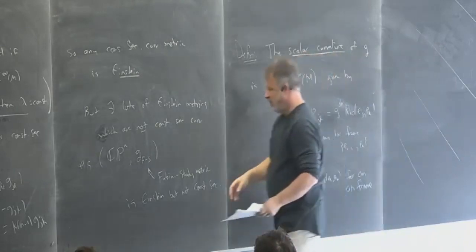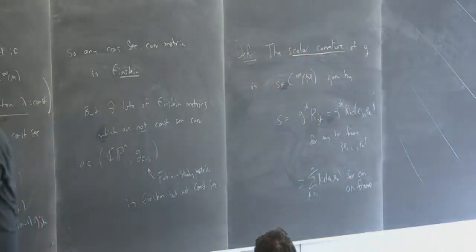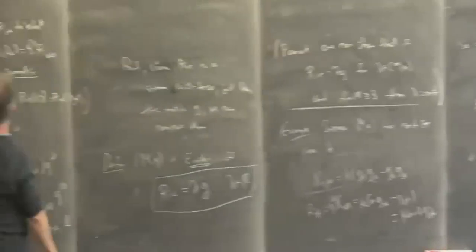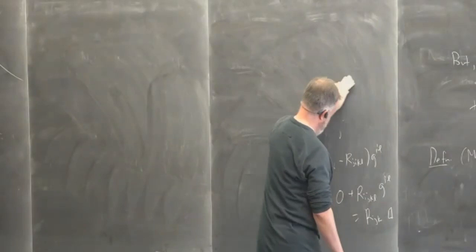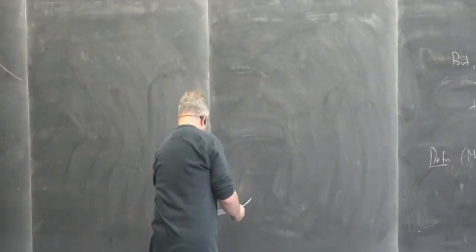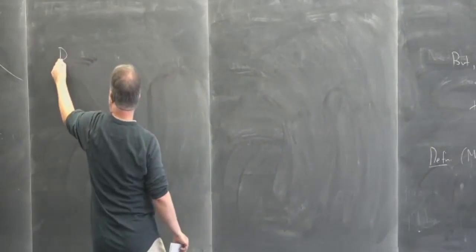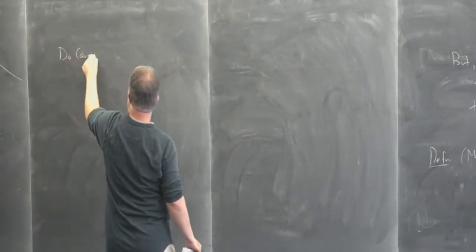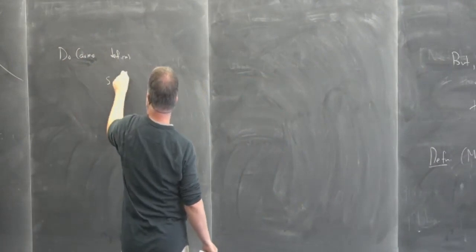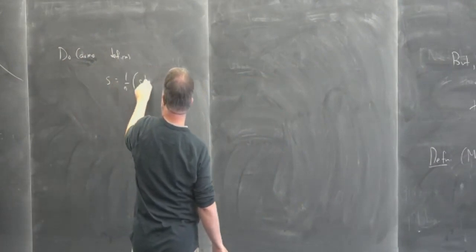This is a function — we've taken another contraction and gotten rid of all the indices. Each time we go from Riemann to Ricci to scalar curvature, we lose more information. Do Carmo defines S to be 1/n times the standard definition.